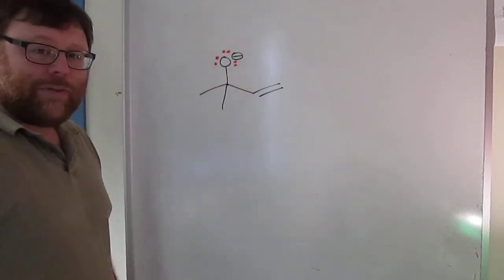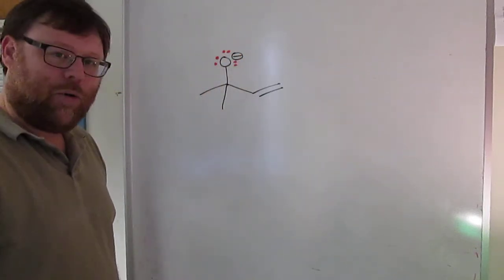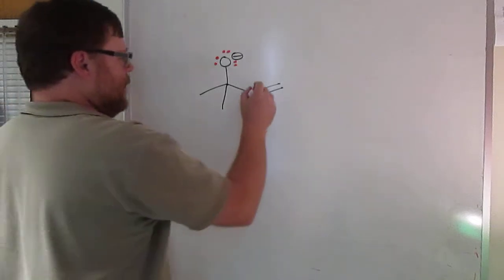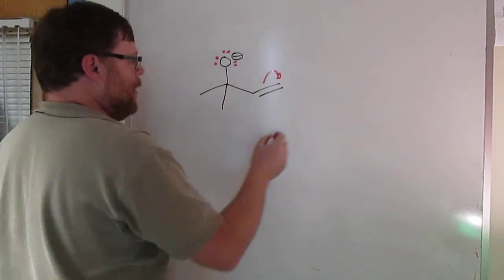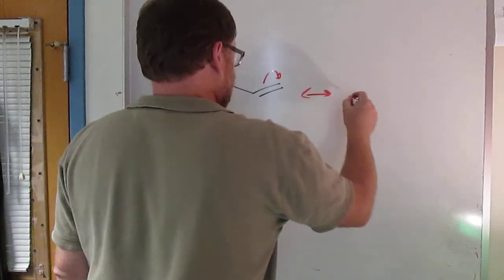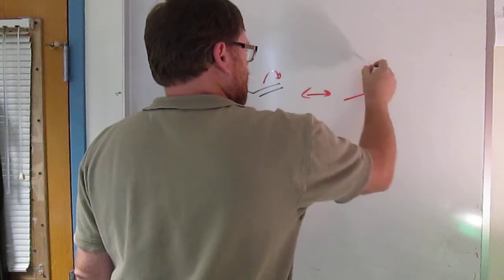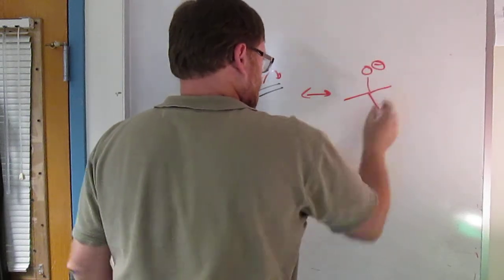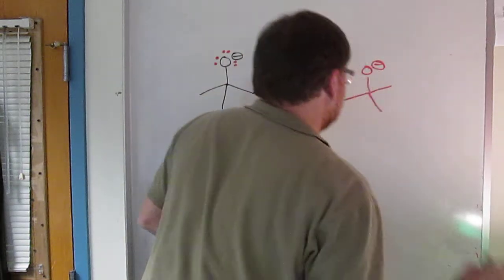Were you able to draw a resonance form? I hope not. There is a trivial resonance form. The trivial resonance form is any pi bond. You can move the electrons. Sorry.